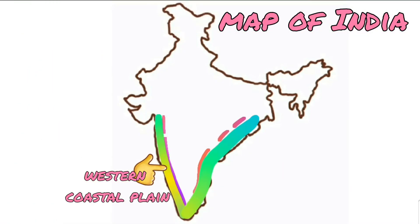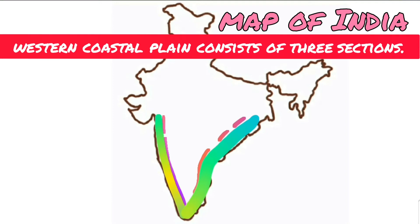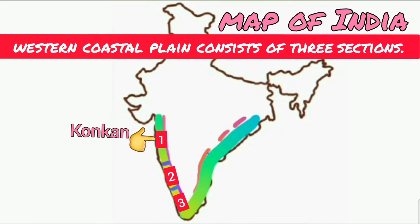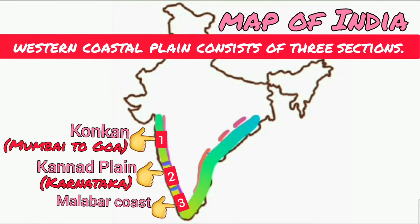The Western Coastal Plain is sandwiched between the Western Ghats and the Arabian Sea. It consists of three sections. The northern part of the coast is called the Konkan Plain, which runs from Mumbai to Goa. The central stretch is called the Kannad Plain, which is in Karnataka. While the southern stretch is referred to as the Malabar Coast, which is in Kerala.